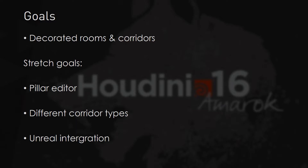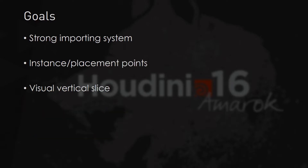In week one or two I quickly realized this was way over scope, so I scrapped all of it and remade three points: a strong importing system, instance and placement points, and a visual vertical slice. The strong importing system meant making a system that can import geometry from Unreal, clean it up, add usable info, and throw it into the placement point system — and I wanted to be able to reuse it in later projects. Instance and placement points meant taking the geometry and turning it into points I could later place art assets on. The visual vertical slice was a proof of concept to show what the art is going to look like if the tool is fully finished.